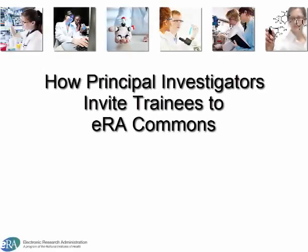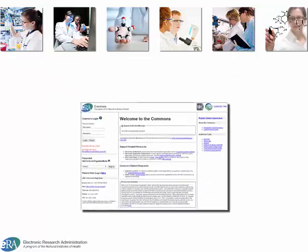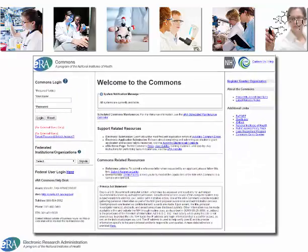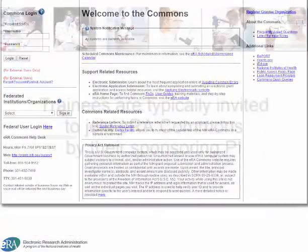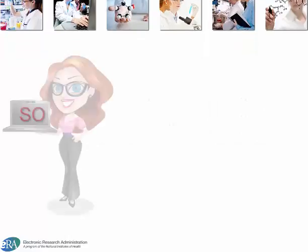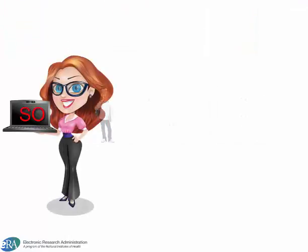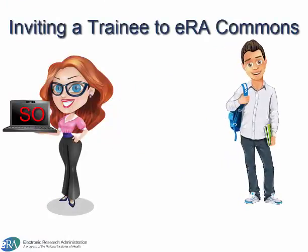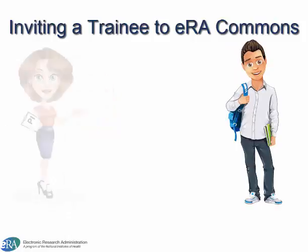Welcome to this tutorial on how principal investigators invite trainees to eRA Commons. Trainees are another type of account used in eRA Commons, and the creation of these accounts can be a little different from scientific or administrative accounts. Trainees are typically invited to register in eRA Commons by their sponsoring principal investigator, or PI. But as with other accounts, signing officials or account administrators can also create trainee accounts.